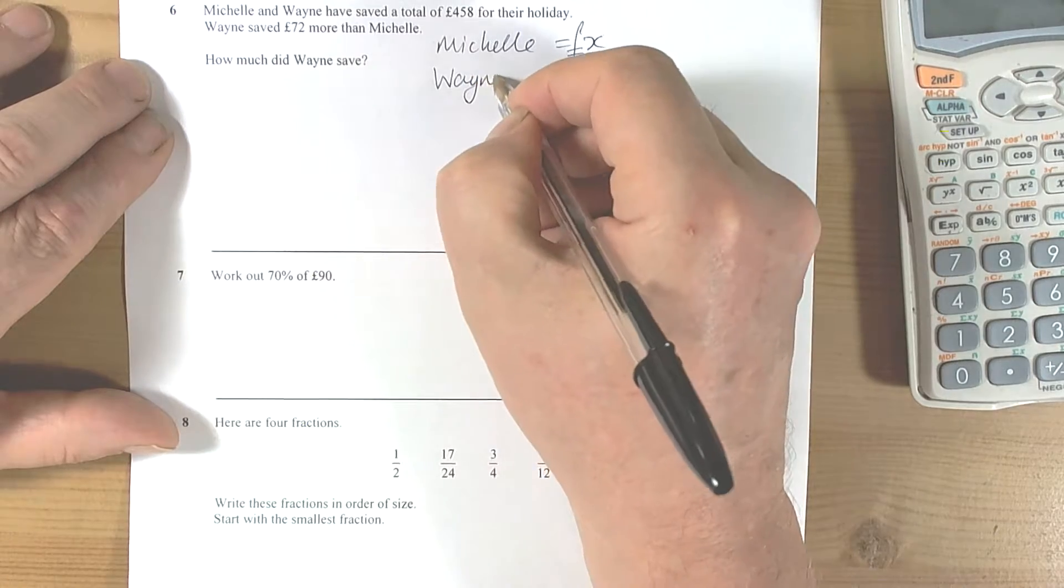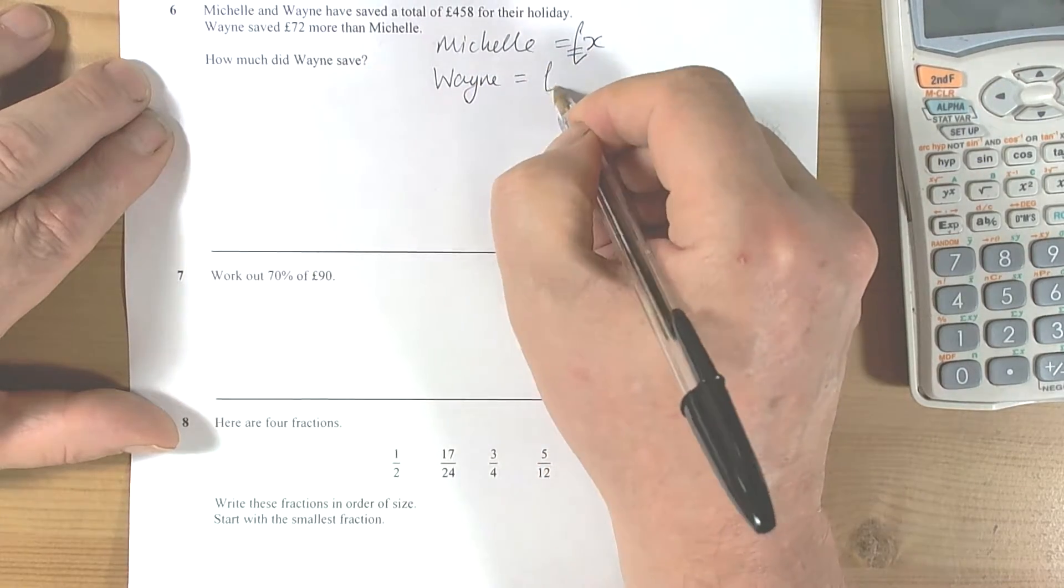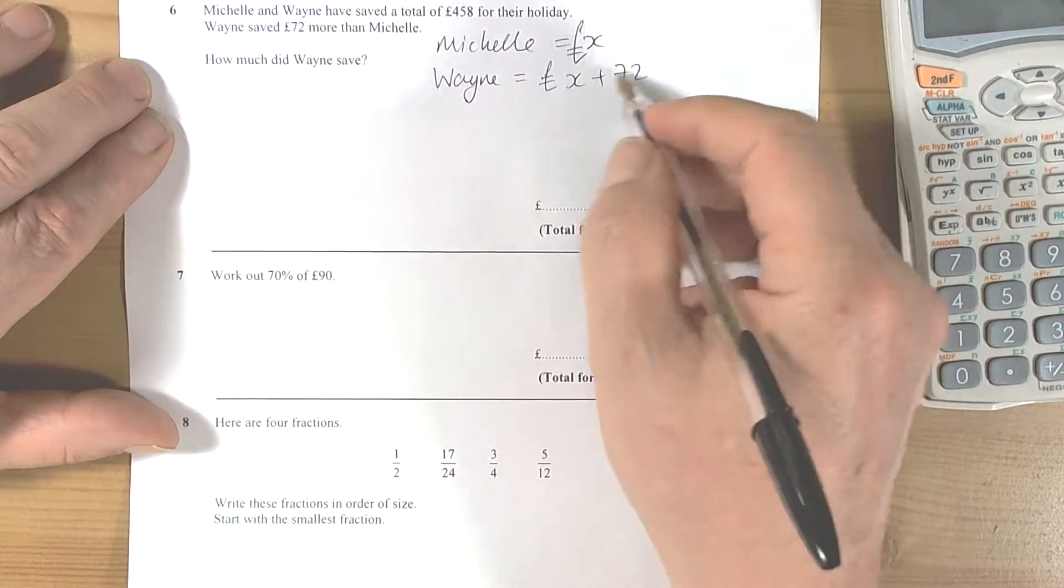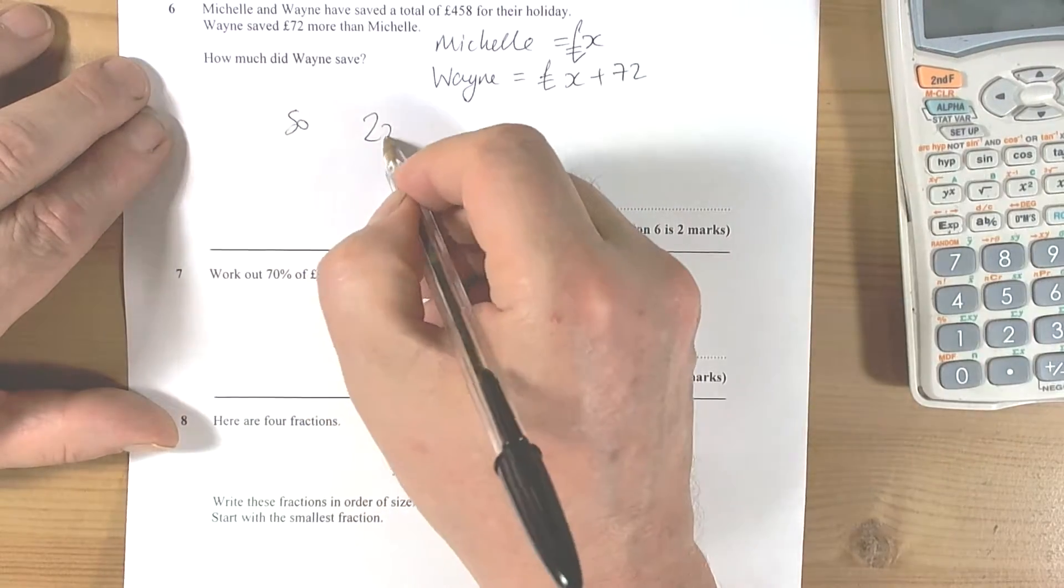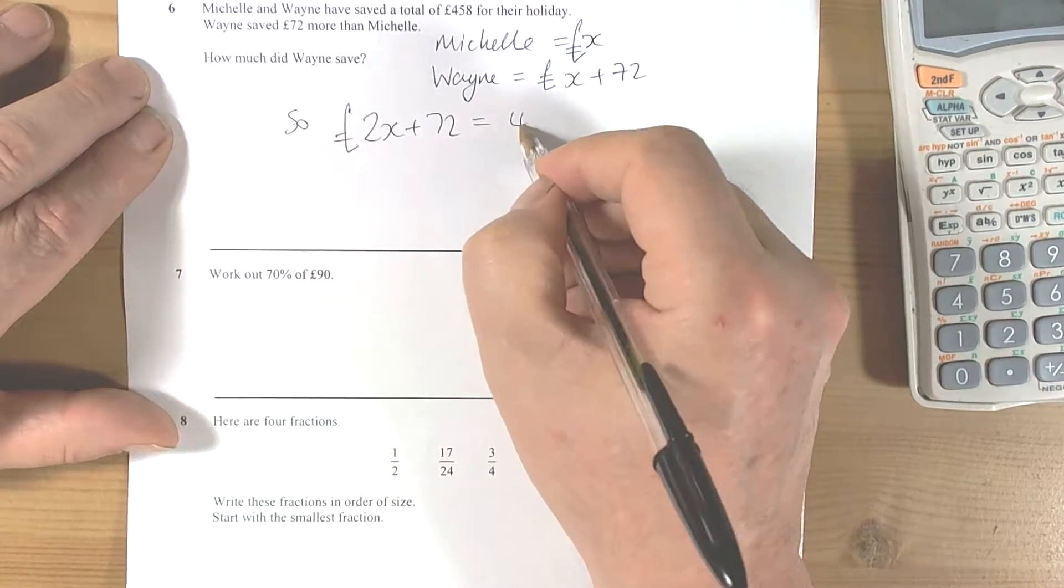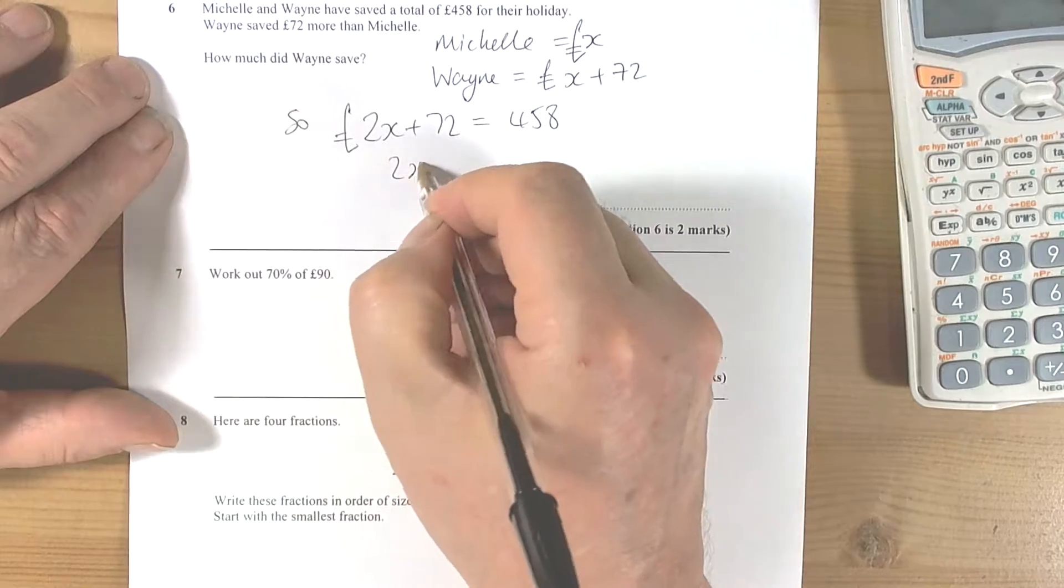They say 72 pounds more, so 2x plus 72 must equal 458.